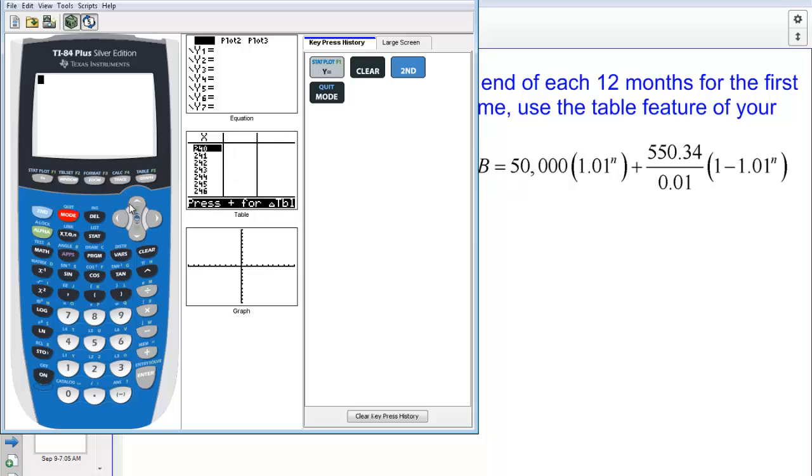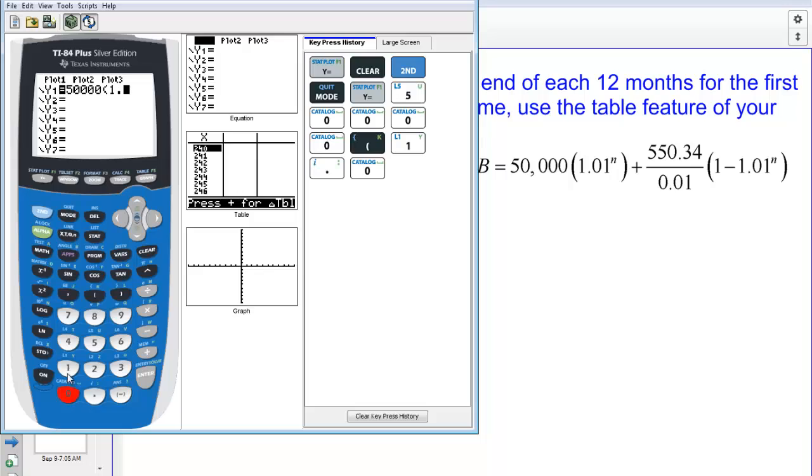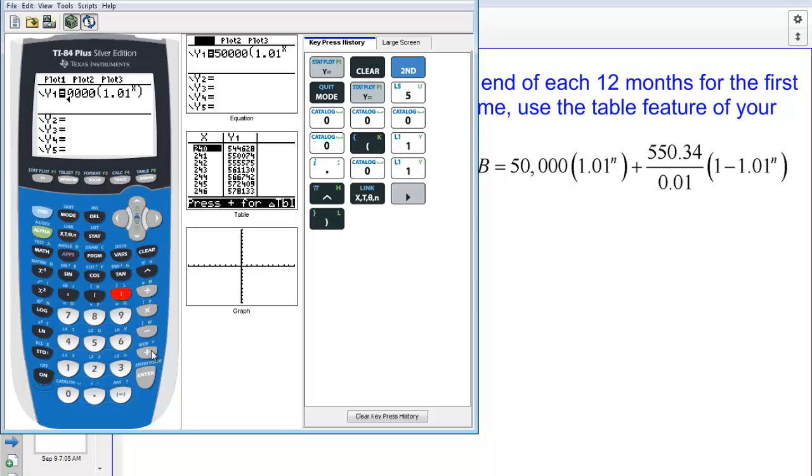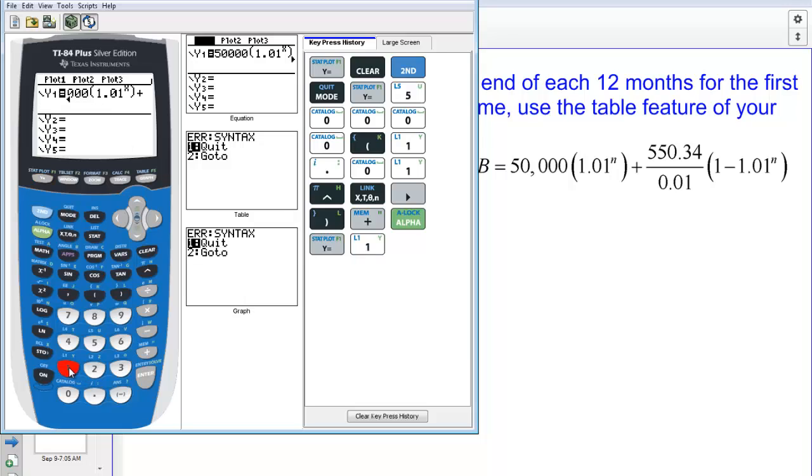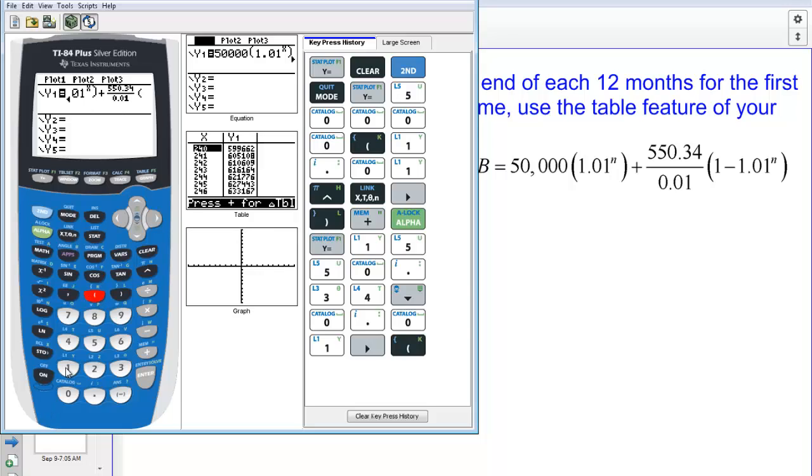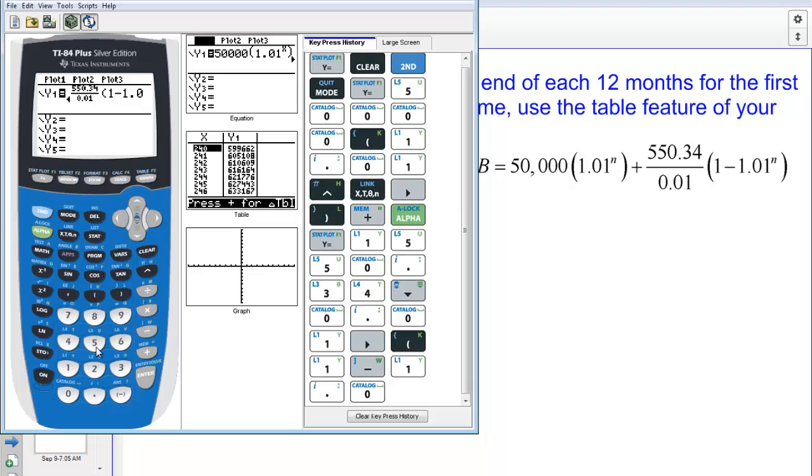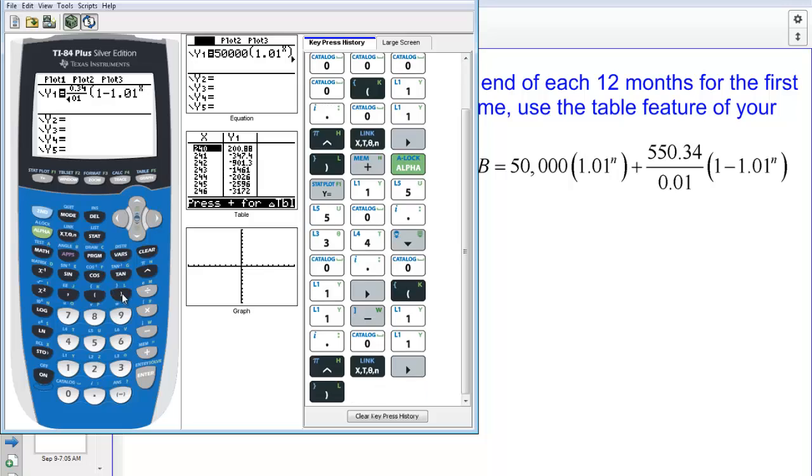First thing we need to do is get this equation into our calculator. So I'll go to Y equals and plug in 50,000 times 1.01 raised to the X. I'll move over and close off the information. Plus, now I need a fraction, so I'm going to go into my fraction template, alpha F1, and choose that first fraction template. $550.34, move down to the denominator, divided by our monthly interest rate, times this expression 1 minus 1.01 raised to the X, and close it off. Do a quick double check to make sure we've input the equation correctly.